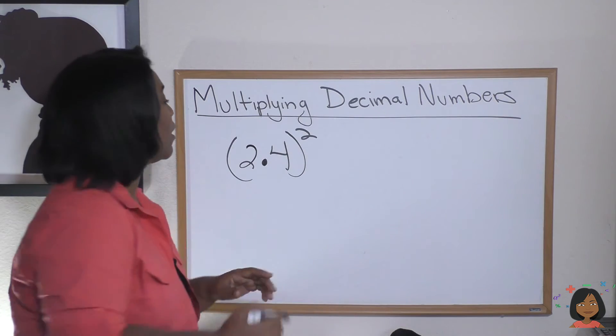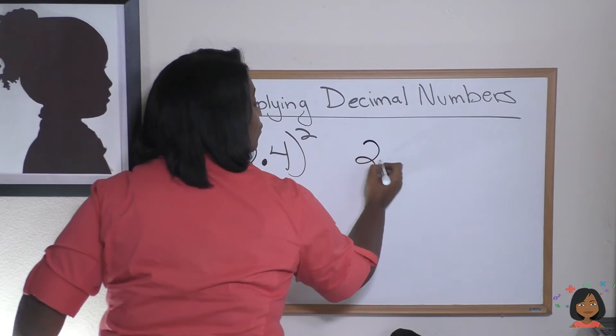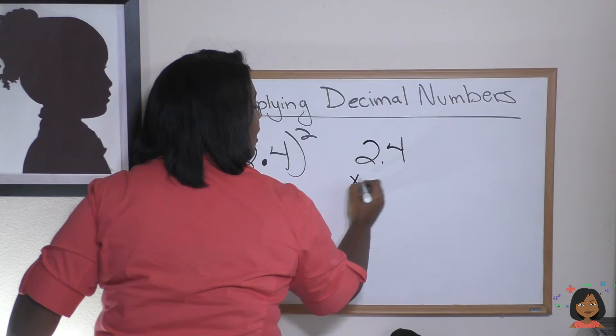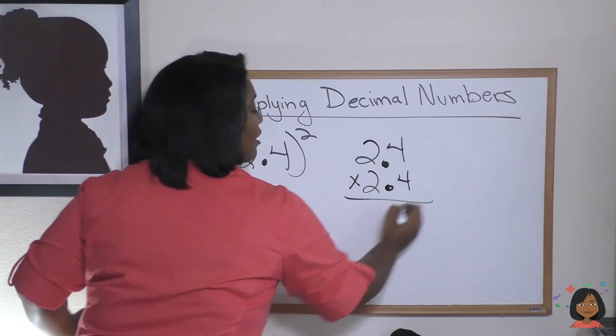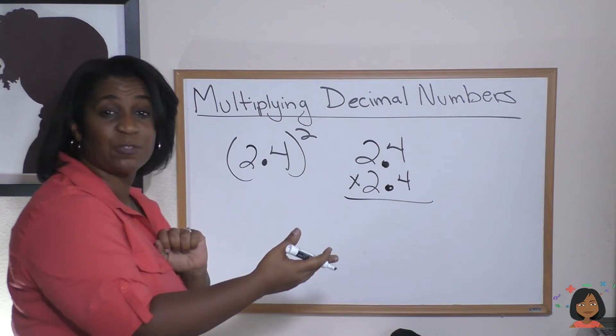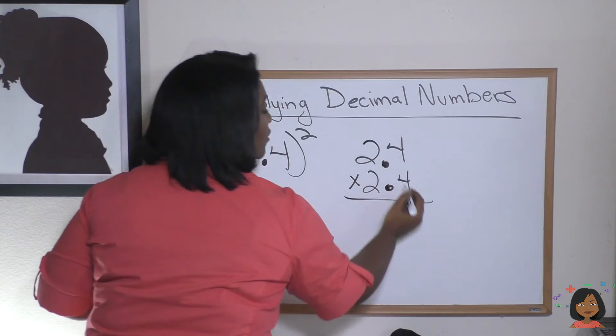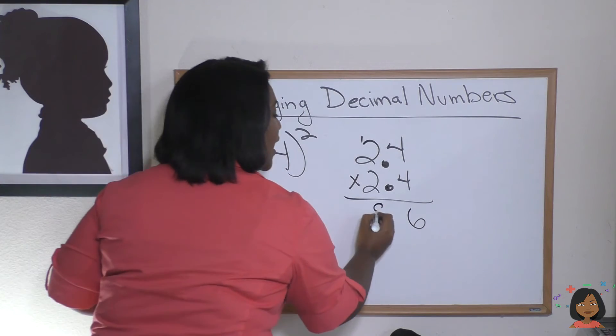Now you remember. Okay. So here we go. 2.4 times 2.4. Nice big decimal points. The rule is do your multiplication like regular. Here we go. Four times four is 16. Four times two is eight, one is nine.